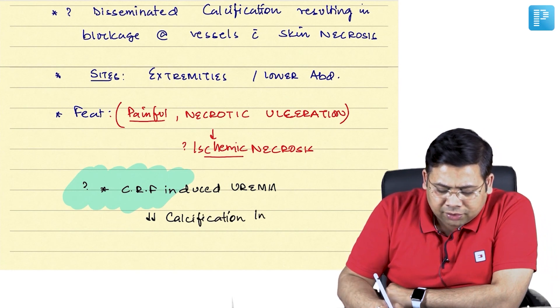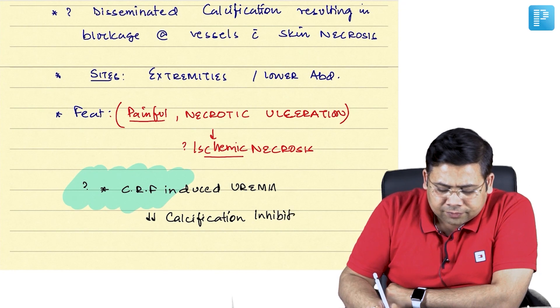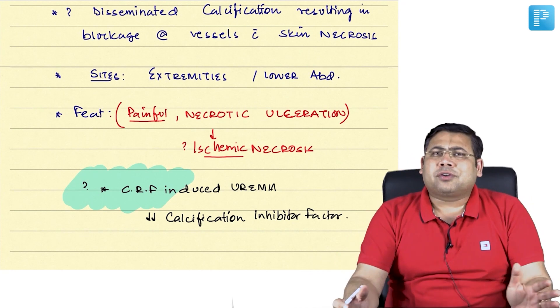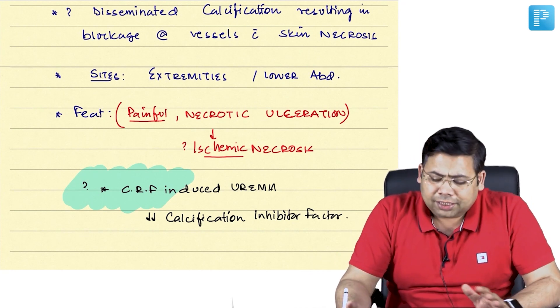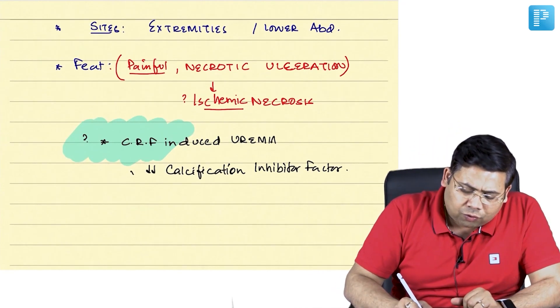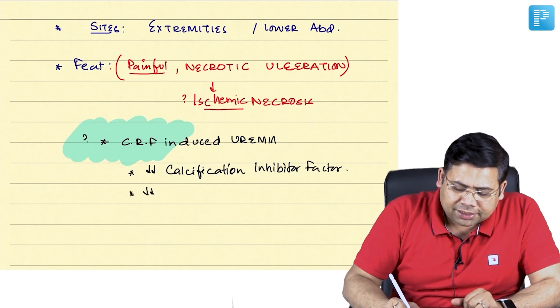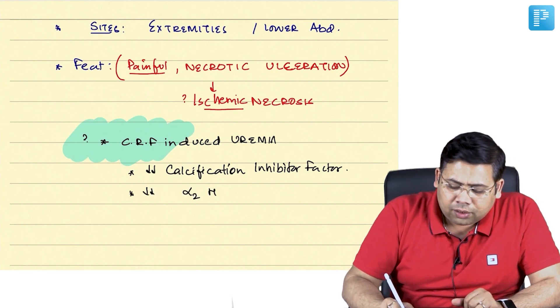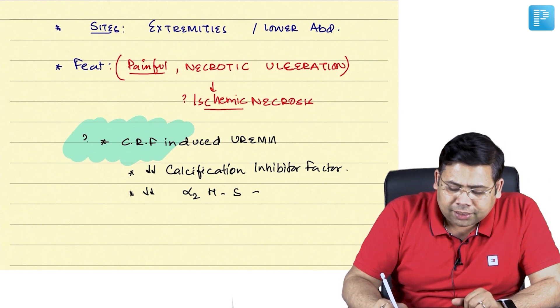This calcification inhibitor factor is decreased and therefore there is generalized dissemination of calcium deposit and hence calcification. There is also decrease in alpha-2 Hs glycoprotein.